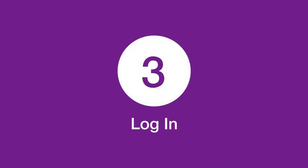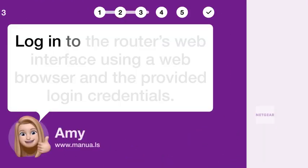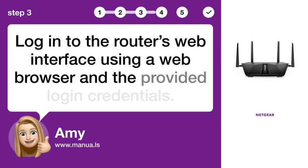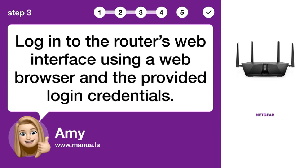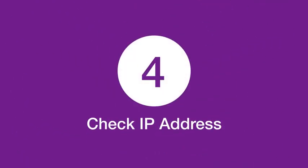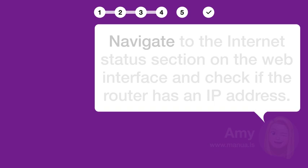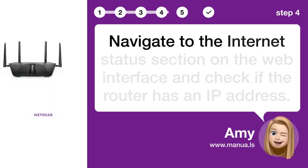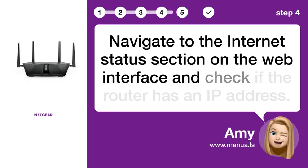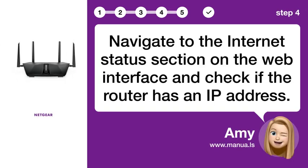Step 3: Log in. Log in to the router's web interface using a web browser and the provided login credentials. Step 4: Check IP address. Navigate to the Internet Status section on the web interface and check if the router has an IP address.